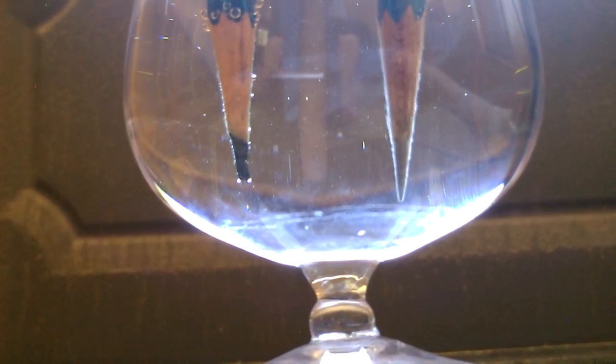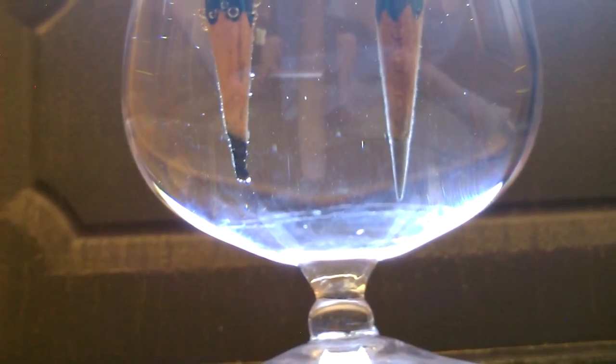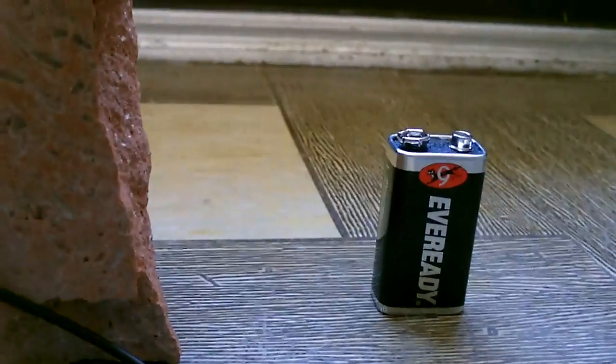That's just a small 12-volt solar panel directly connected to the tips of the pencils. You can also use a 9-volt battery too if you want instead of the solar panel.